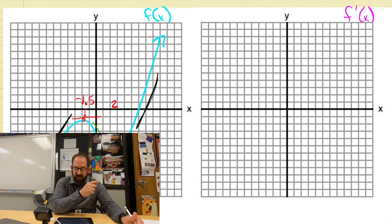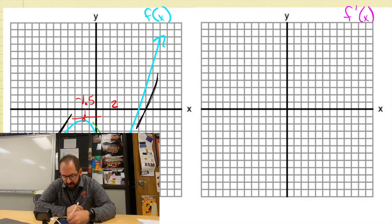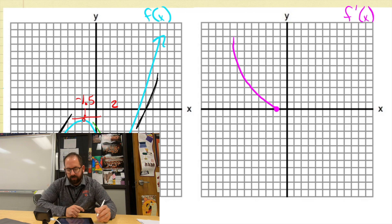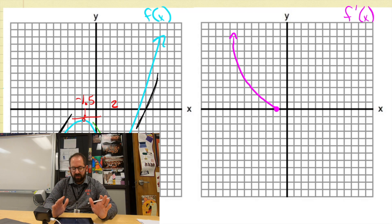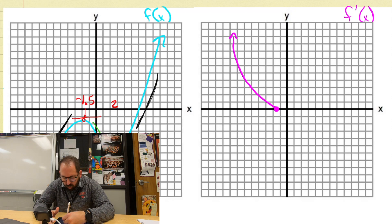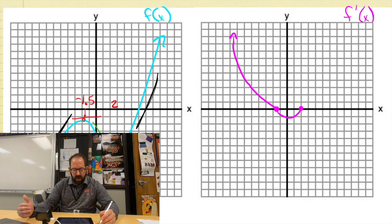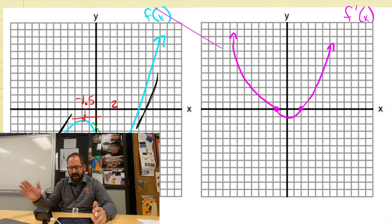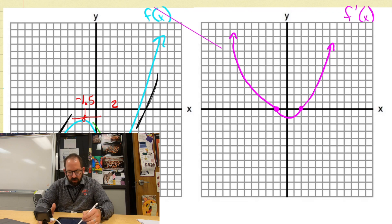On the far left side up to negative 1.5, the slope is all positive and it gradually turned into zero — it gradually flowed to zero. Then after negative 1.5, the slope turned negative up until about x = 2. The slope turned out to be negative and it was very gradual. It came back to zero, and then eventually the slope turns positive and kind of goes up forever. This is a graph of the first derivative of the original function.